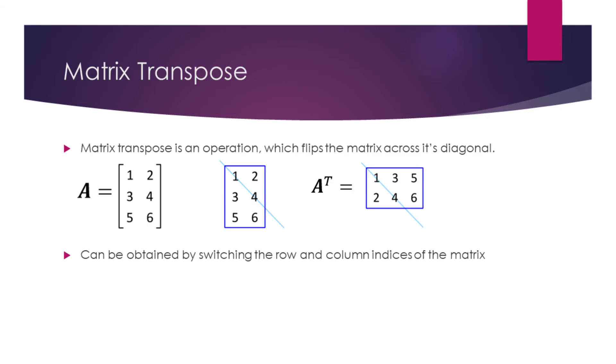Matrix transpose is an operation which flips the matrix across its diagonal line. Consider a matrix A. Let's add a diagonal to this matrix as shown in the middle of the slide. If we flip the matrix across this diagonal, we will obtain the rightmost matrix. This is the transpose of A.